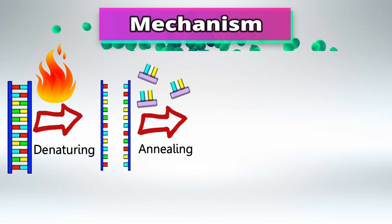And then we'll add primers in a process called annealing. These RNA primers will attach to their respective parts in the separate DNA strands.